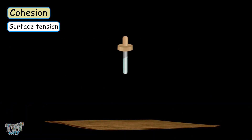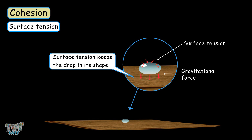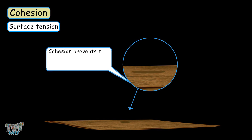Here is another example of surface tension. If you place a drop of water on a piece of cloth, the surface tension will try to keep it in its shape — to retain the shape of the drop — and molecules on the surface of the cloth will attract it towards itself. When the force of attraction of the cloth molecules exceeds the force of surface tension in the droplet, the water will go ahead and wet the cloth. So cohesion between the molecules of water prevents the water from spreading easily.